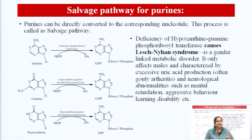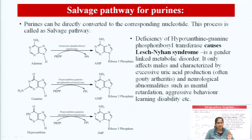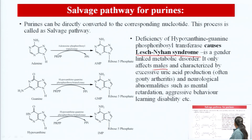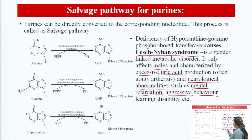Regarding hypoxanthine: if there is a deficiency of the enzyme hypoxanthine-guanine phosphoribosyl transferase — which converts guanine into guanosine monophosphate and hypoxanthine into hypoxanthine monophosphate — there is a disease called Lesch-Nyhan syndrome. It is specifically a gender-linked metabolic disorder that affects males exclusively, with symptoms including overproduction of uric acid, neurological abnormalities, mental retardation, aggressive behavior, and learning disabilities.